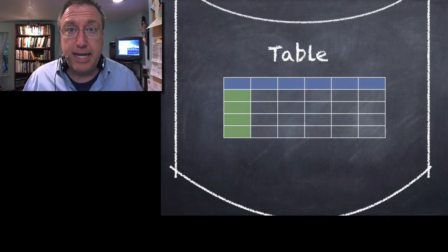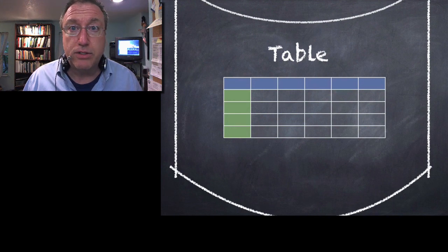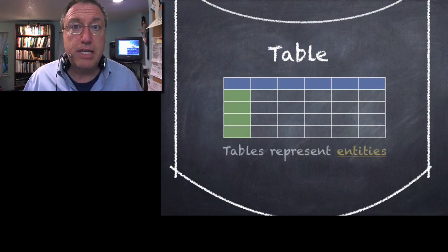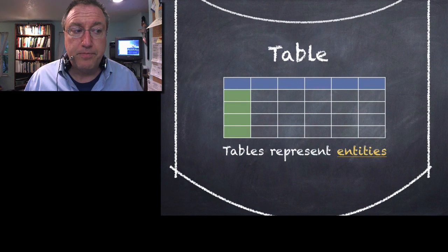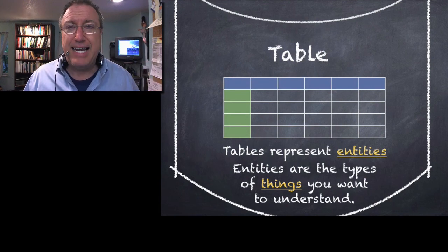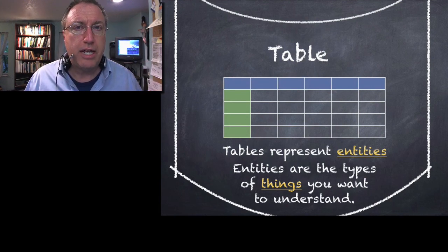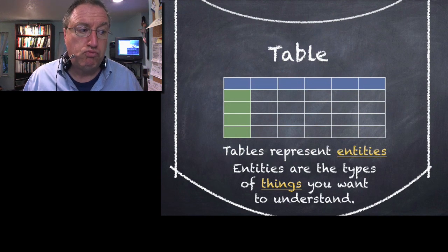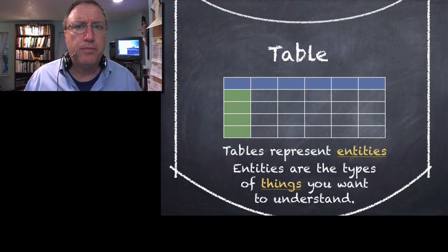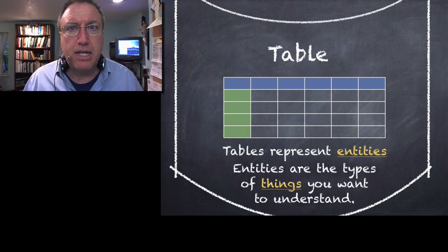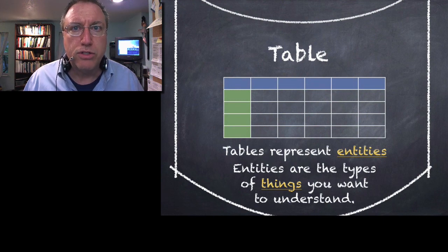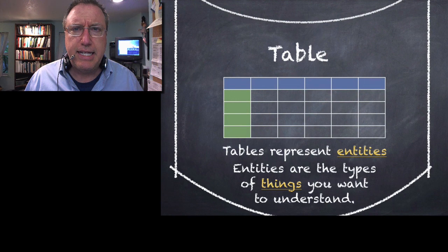Databases contain tables. Tables are like spreadsheets or tables in a Word document. Each table represents a kind of entity. What's an entity? An entity is just a thing. Anything. Anything you want to understand more about. Entities could be people or houses. Real things that exist in the world. Or you could make up entities to help you organize your business, like having account ledgers and invoices. Entities are things.